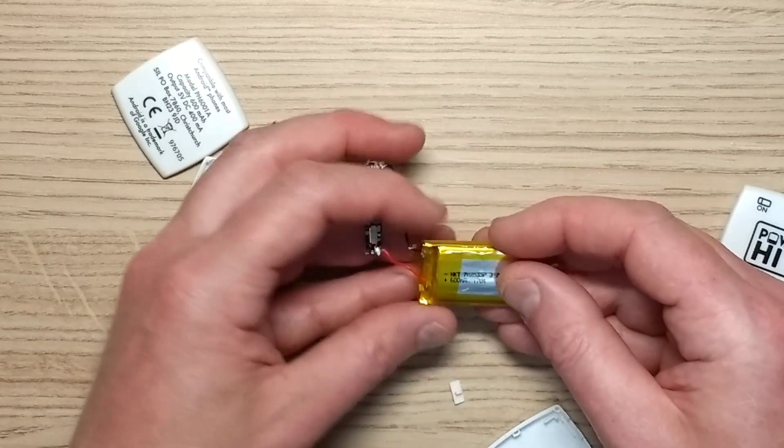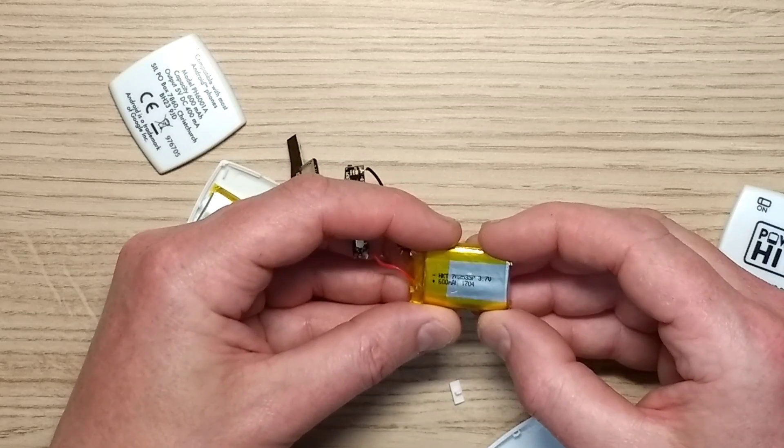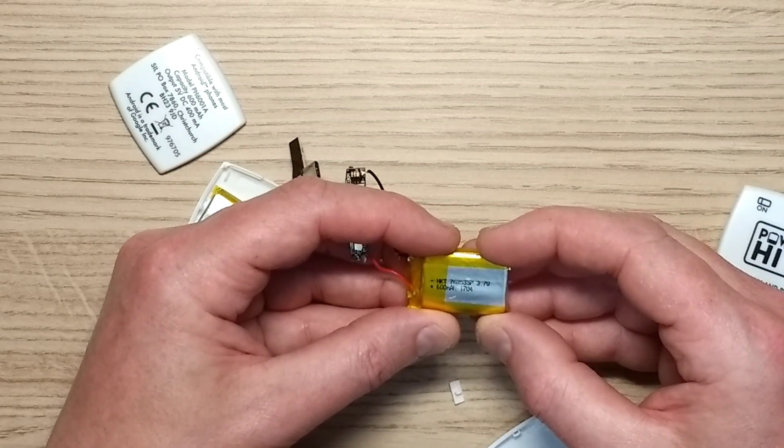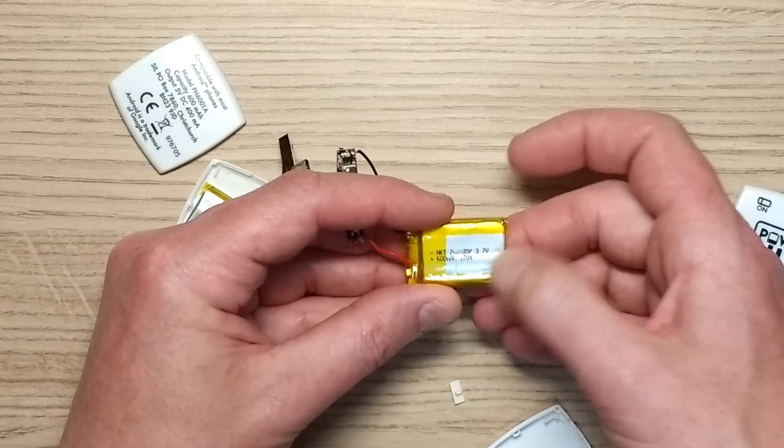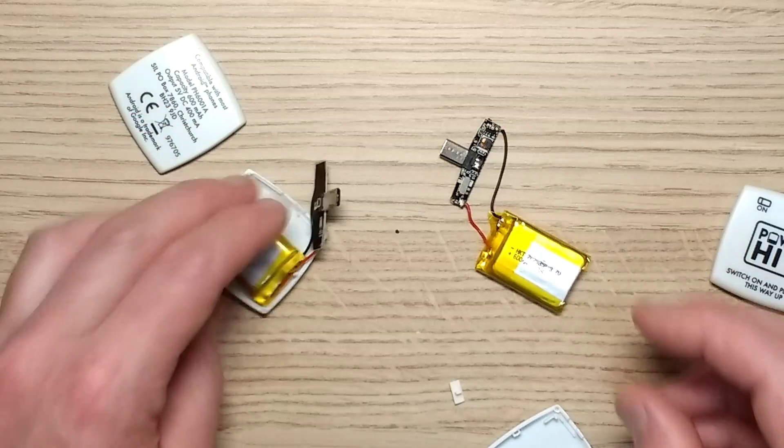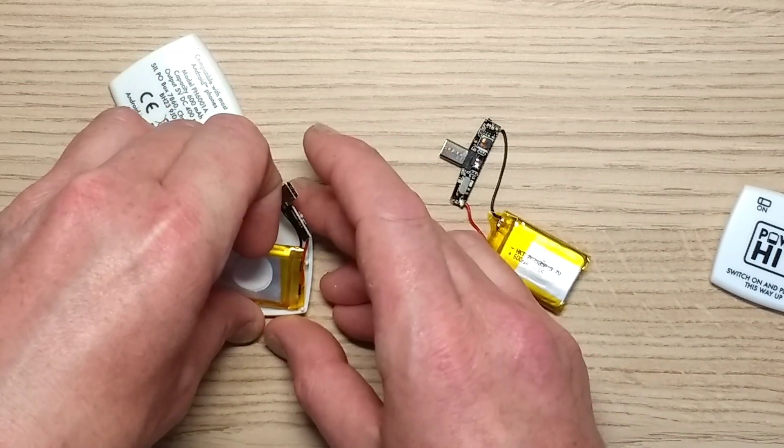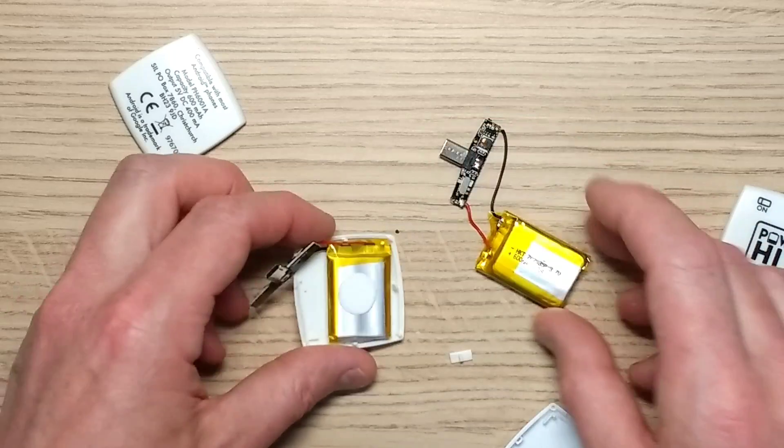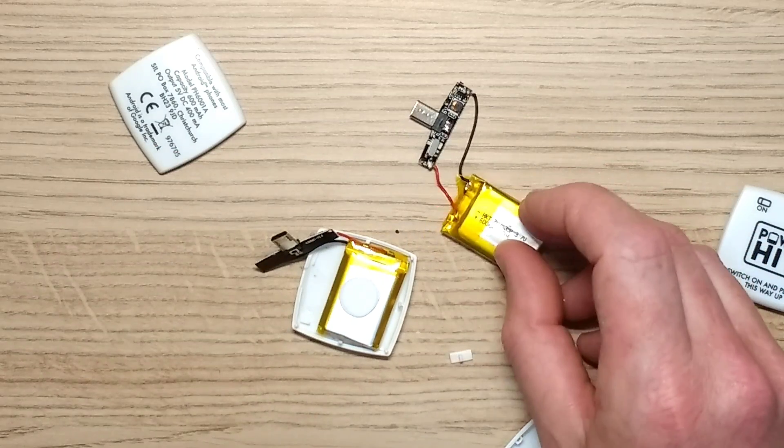The cell itself is called HKT702535P, 3.7 volt, which suggests it's lithium ion, and it's rated 600 milliamp hour. And keep in mind that this is designed to be used once and then binned, which is just an apocalypse. Because the cell, to all intents and purposes, appears to be rechargeable.